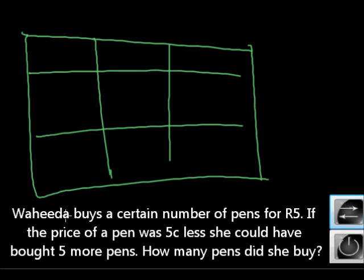So Wahida buys x number of pens for 5 Rand. Again, if the price of a pen had been 5 cents less, how much did the pen cost? Originally? How much does a pen cost? We don't know. So what are we going to call that one? Why? We're going to call it y.